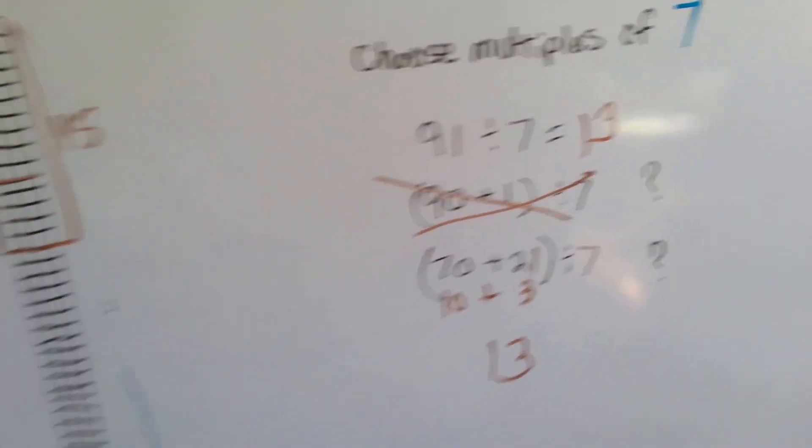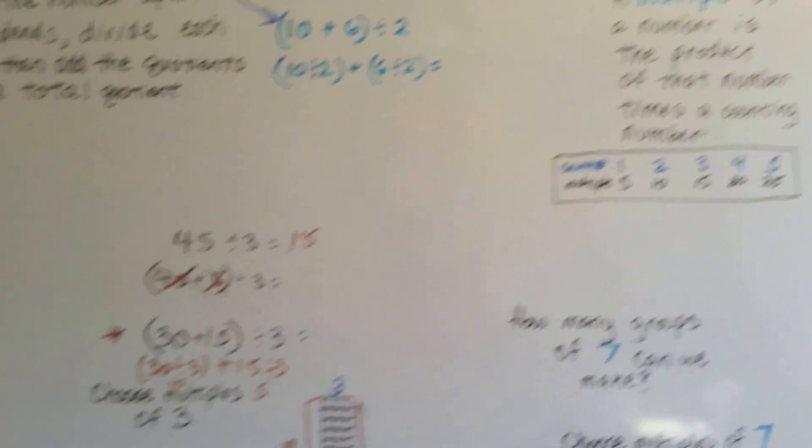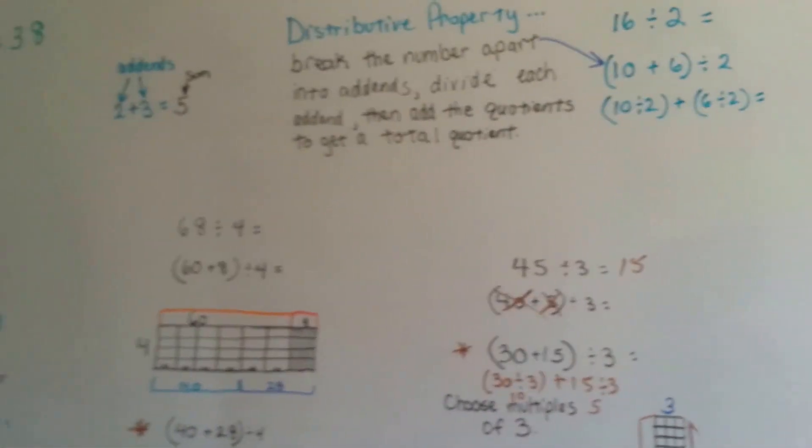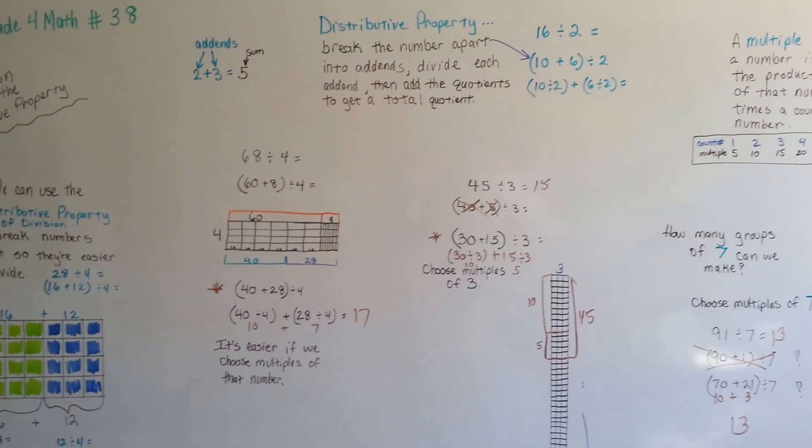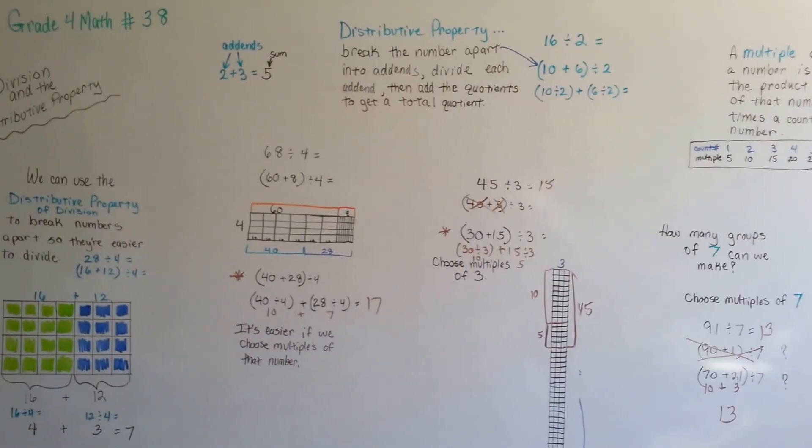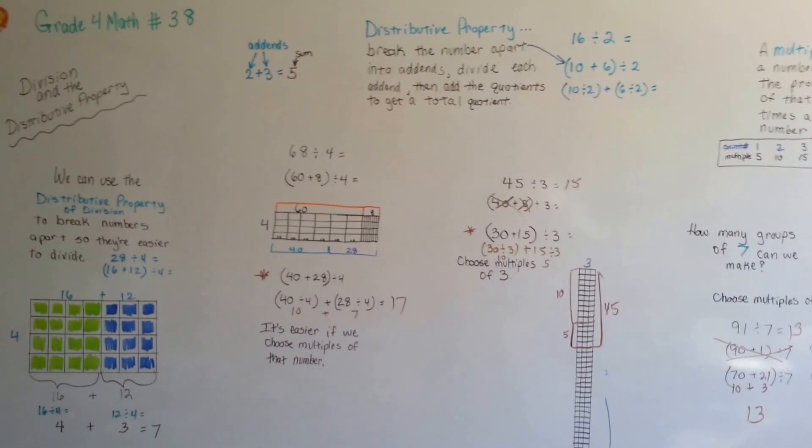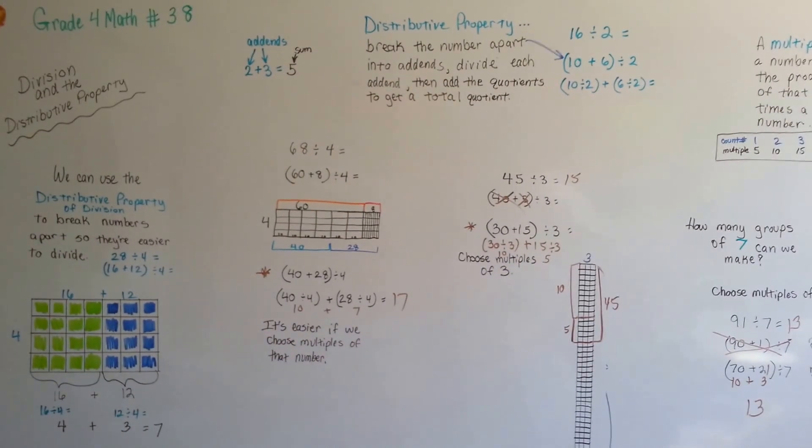So make sure you break them up into multiples. It's very important you break them up into multiples when you break the addends up for the distributive property. It's going to make a very big difference as to whether you're going to be able to solve the problem or not. Remember multiples. I will see you next video. You're doing a great job. I'm really proud of you. Let's keep going. Bye.